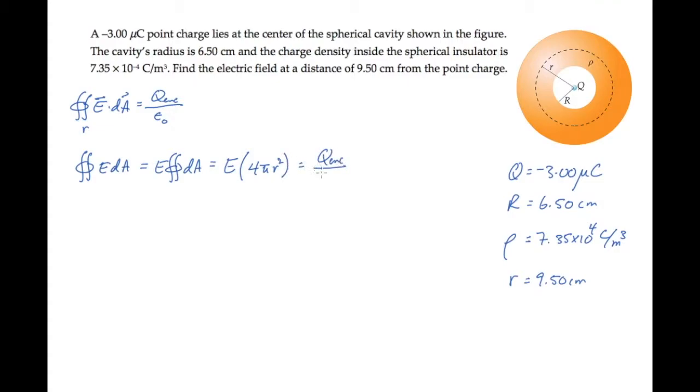That's equal to the enclosed charge over epsilon naught, which we can solve for the magnitude of the electric field. It equals Q enclosed over 4 pi epsilon naught r squared. From symmetry, we know that field is in the radial, or r hat, direction.